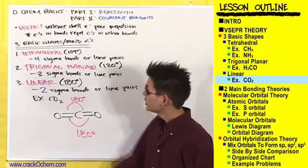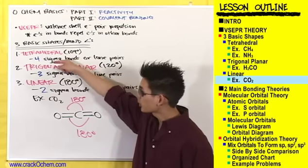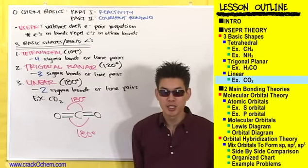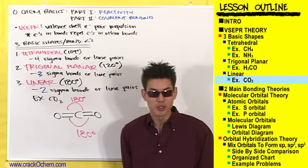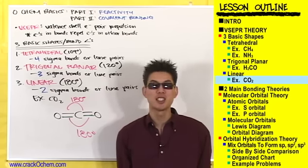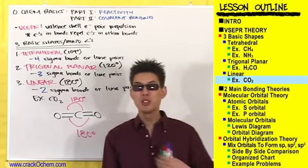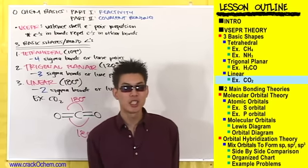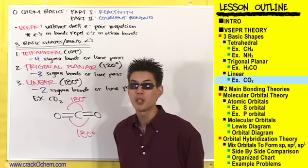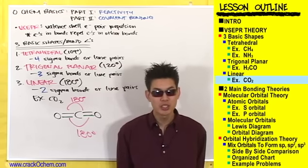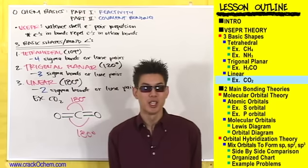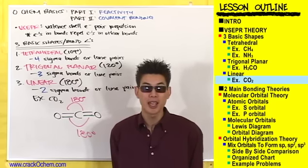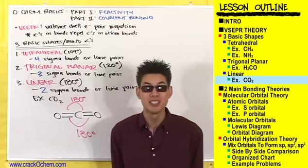That's it for shapes and bond angles. You've seen the three basic shapes: tetrahedral, trigonal planar, and linear, and their corresponding bond angles. This is really a memorization thing, but understanding the reasoning behind it helps. The next thing to cover is how covalent bonding works. There are two main theories that are widely accepted to be the most accurate, and those are the ones we'll go through.